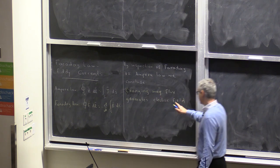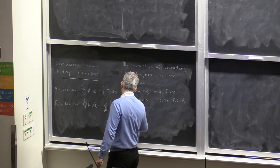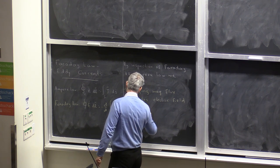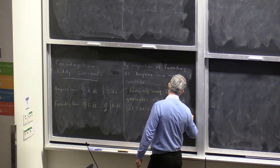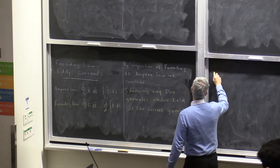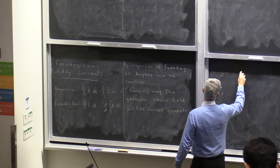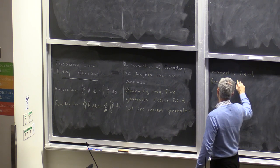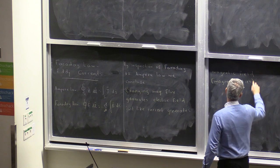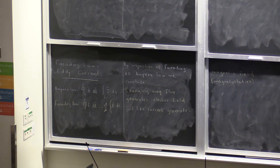So, changing magnetic flux generates electric field just like current generates magnetic field in magnetostatics. It is very important to see the course concepts as a union and try to understand one part using the other, since there are all these very important connections.